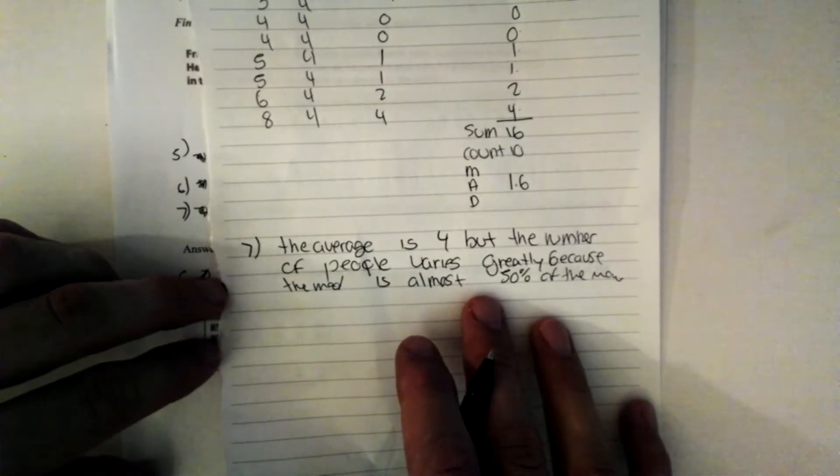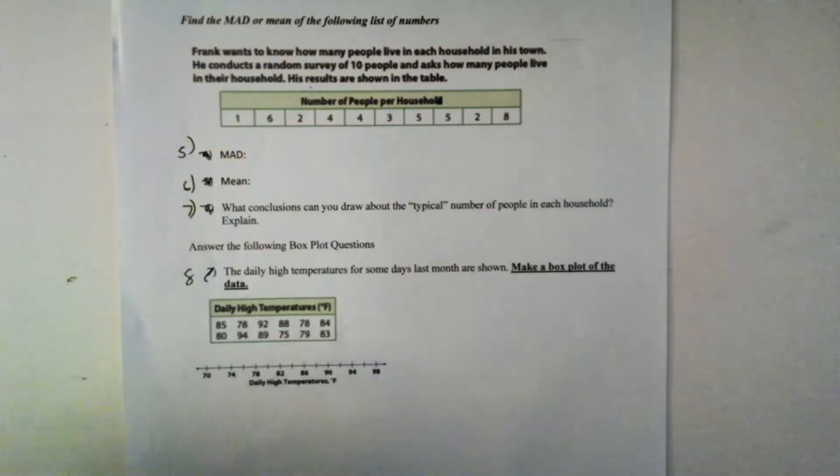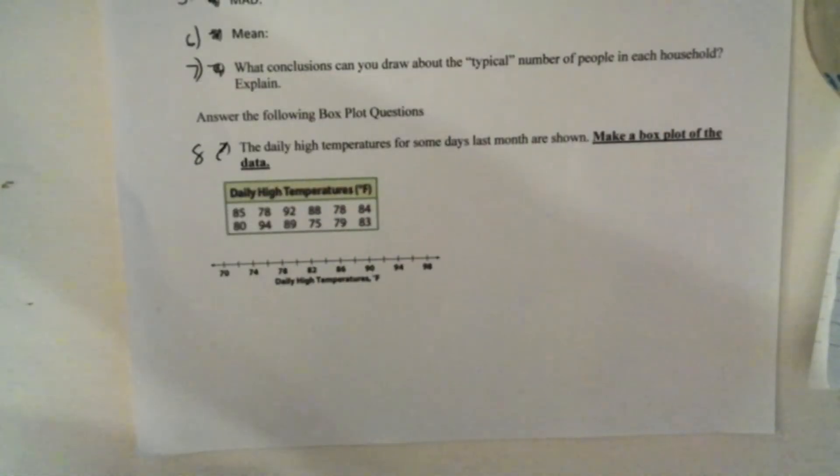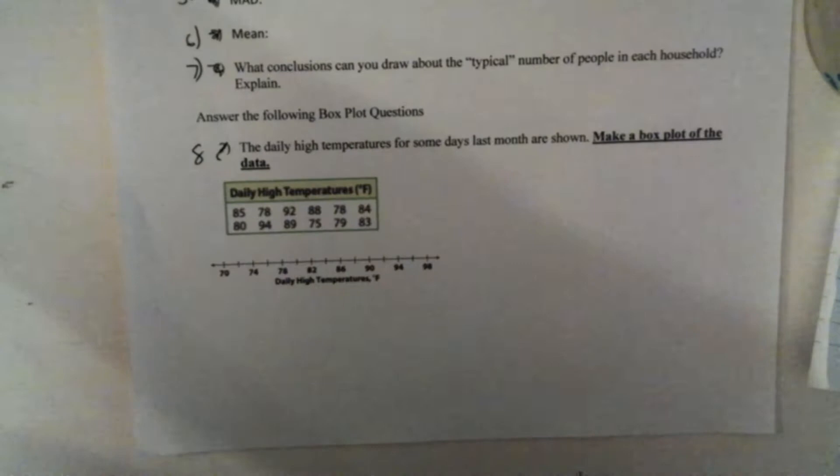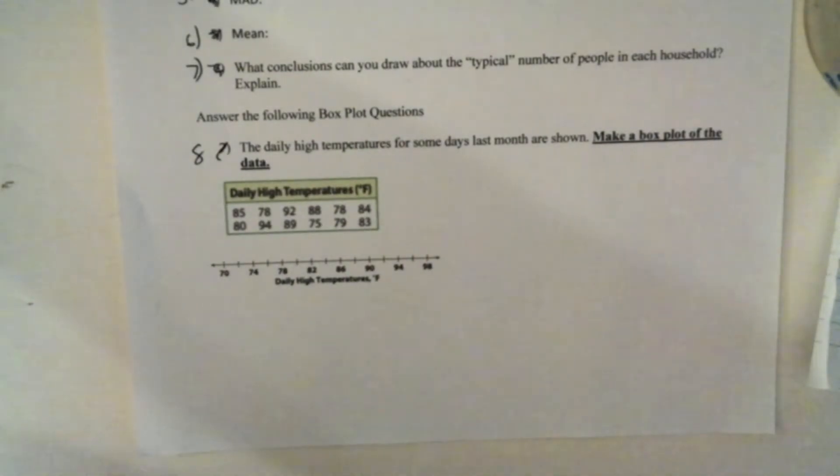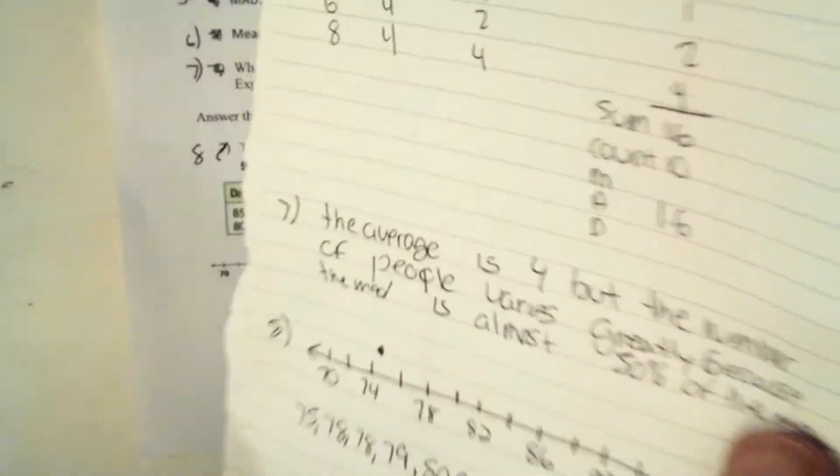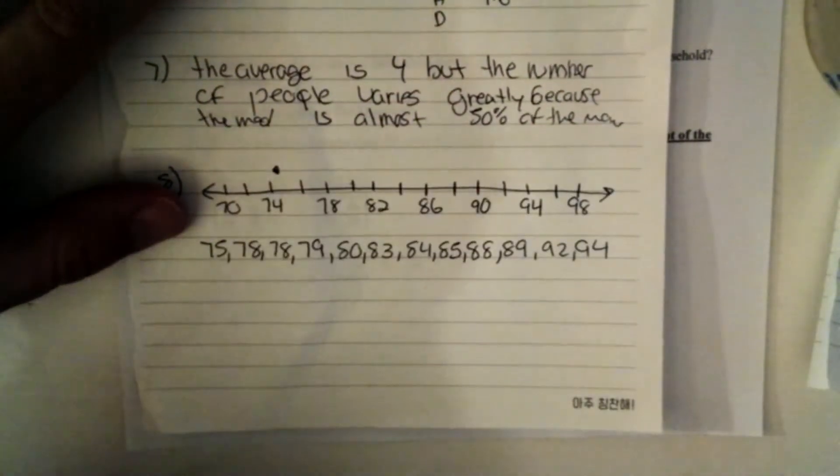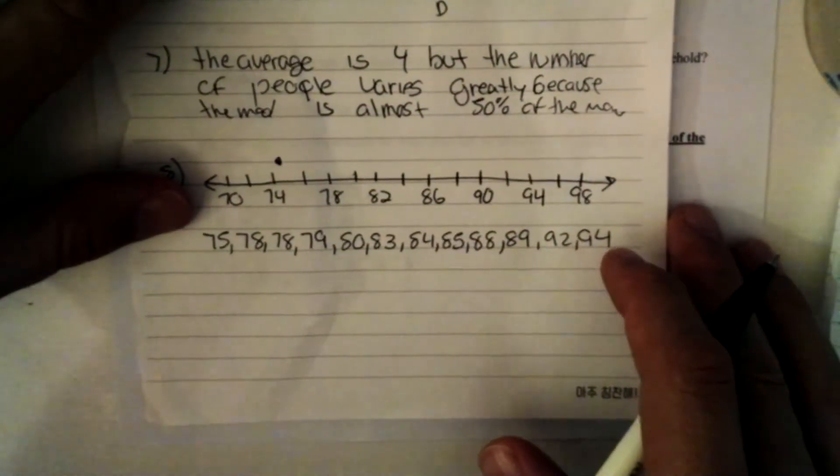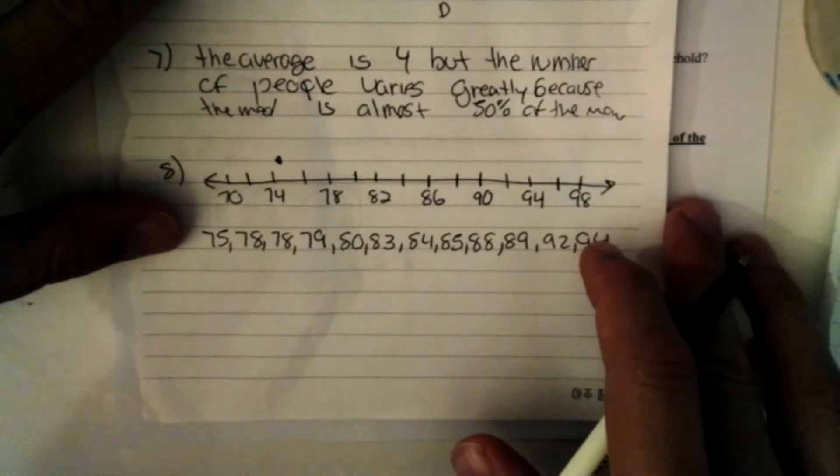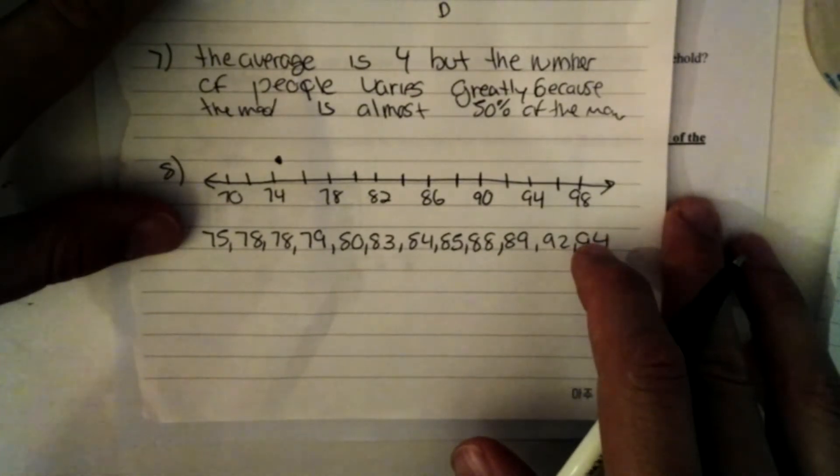The daily high temperatures for some days last month are shown below. Make a box plot of the data. Before we can make a box plot, we have to put our numbers in order from least to greatest. So pause the video and put our numbers in order from least to greatest. So now I put my numbers in order from least to greatest. In order for me to make my box plot, I have to find the median of my data set here.